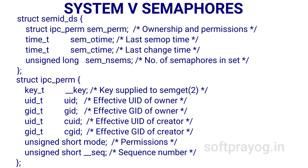The most common use of semctl is to initialize the semaphore. The semget call does not initialize the semaphore, so after semget you call semctl to initialize the semaphore to some value — maybe 1 if it's a binary semaphore, or some other value reflecting the quantity of a resource for counting semaphores.